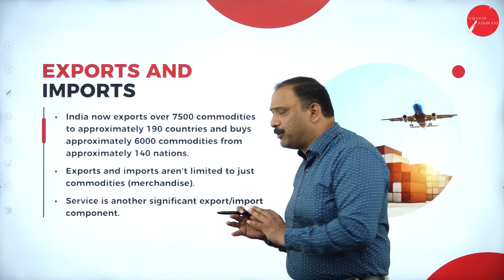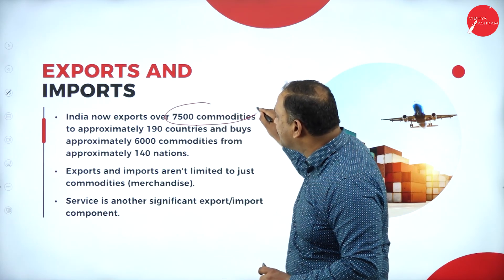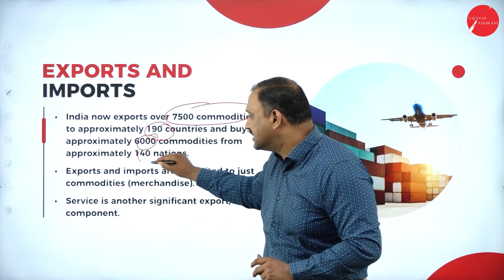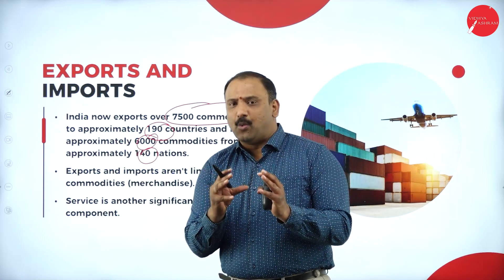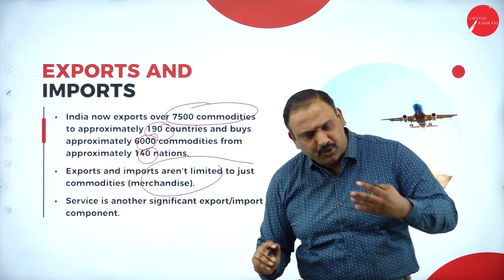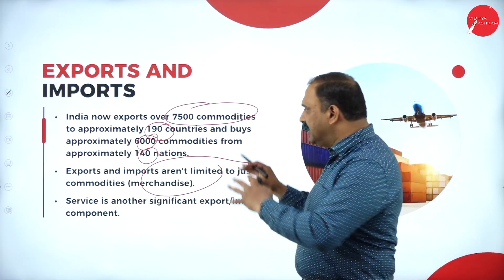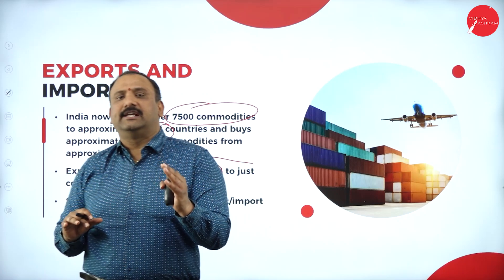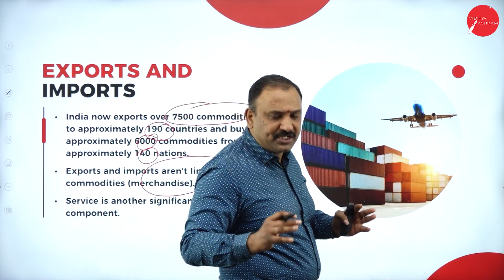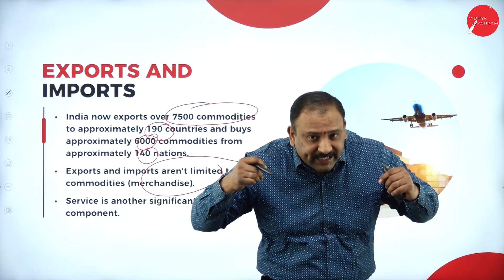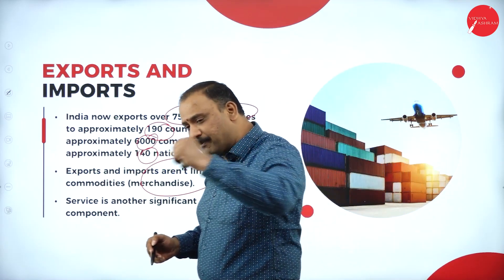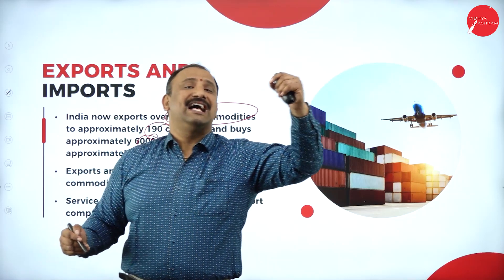Moving further, regarding exports and imports: India now exports about 7,500 commodities to approximately 190 countries and buys about 6,000 commodities from 140 nations. The exports and imports aren't limited to commodities — we are also talking about services. India mutually exchanges goods, buying and selling from different angles and aspects altogether.